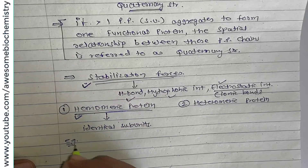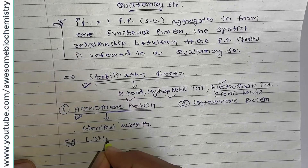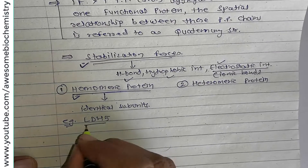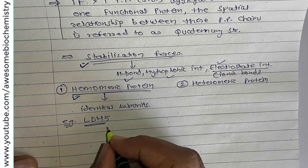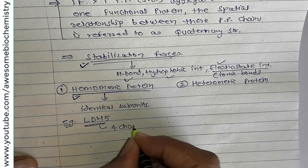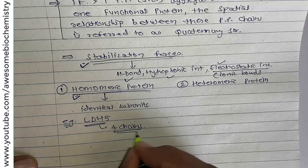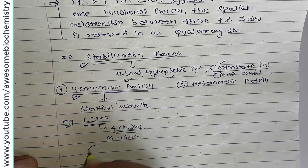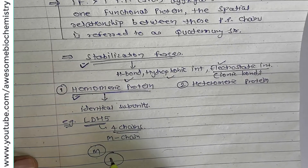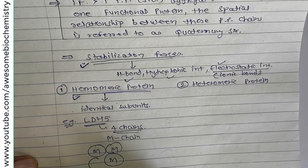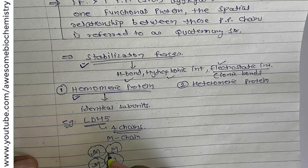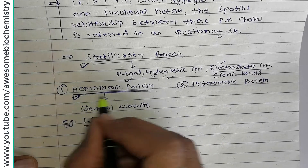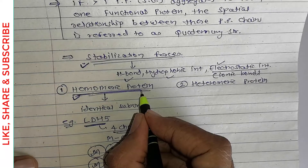One example of a homomeric protein is LDH5, lactate dehydrogenase 5 subtype isoenzyme. It has four chains and therefore has a quaternary structure. All four chains are of the M variety — all four M chain subunits are identical. That is why LDH5 is called a homomeric protein.